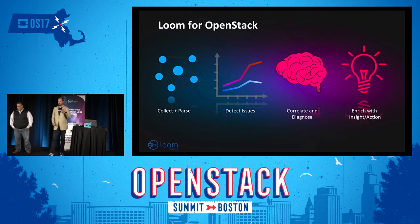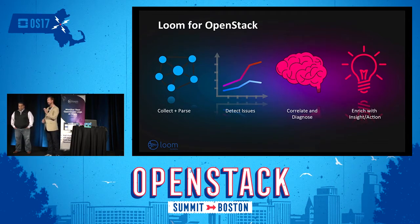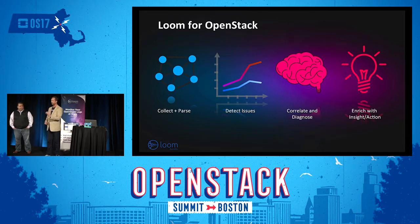We as human beings can't foresee all the things that could go wrong. So we need AI to properly manage and monitor OpenStack. Loom Systems does four things. First, we collect the logs from all of your components in your entire environment. It automatically structures and parses them so that the analysis can happen. Then we apply artificial intelligence and machine learning to understand what normal behavior is for every component.